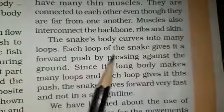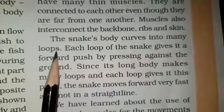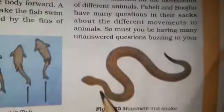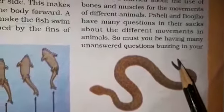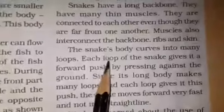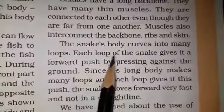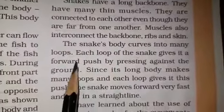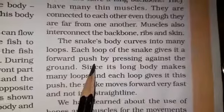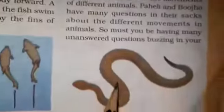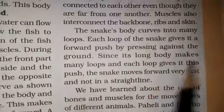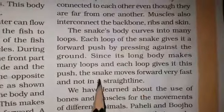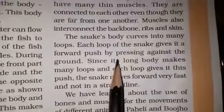The snake's body curves into many loops — look how many loops are made: one loop, one loop, one loop. The snake's body moves in this way, and each loop of the snake gives it a forward push by pressing against the ground.